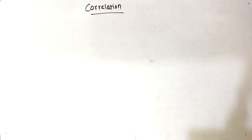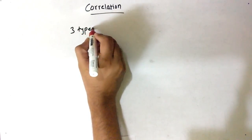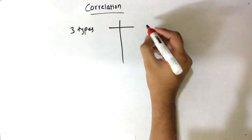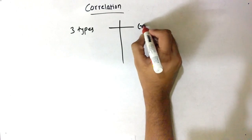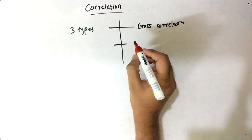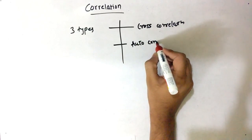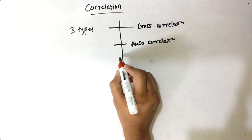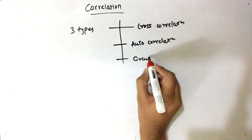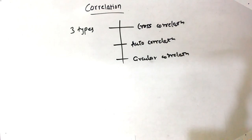Hello friends! Today our topic is correlation. So let's see how many types there are for correlation. There are basically three types: the first type is cross correlation, second is autocorrelation, and third is circular correlation. So let's see how to solve them.